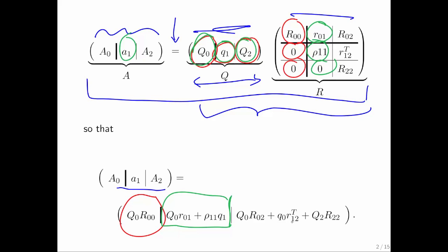And finally, the last part of the matrix here must equal Q0R02 plus Q1 times r12 plus Q2 times R22. And that's stated right here.